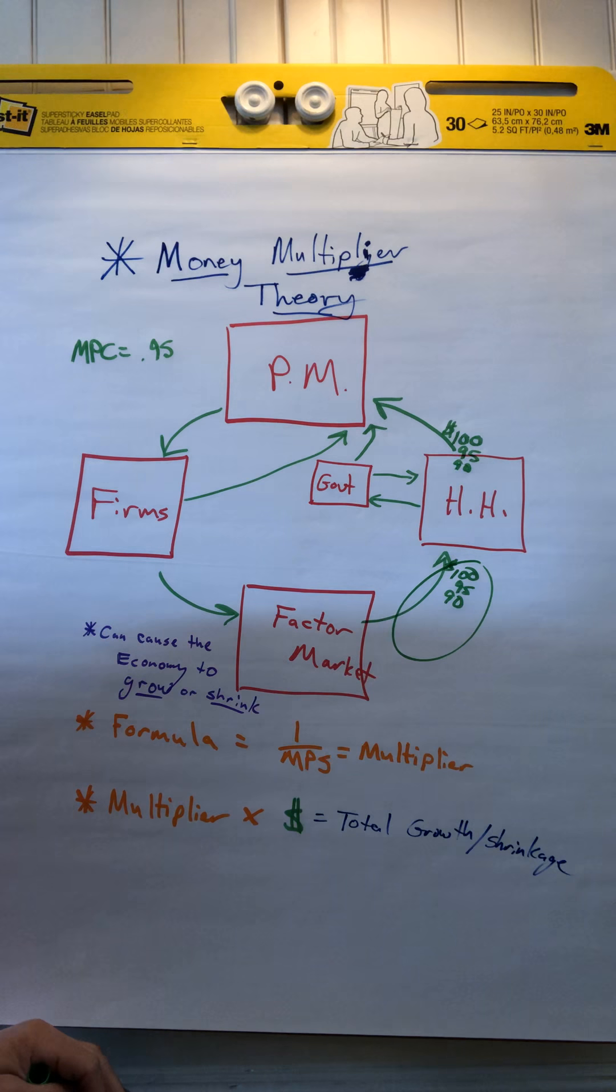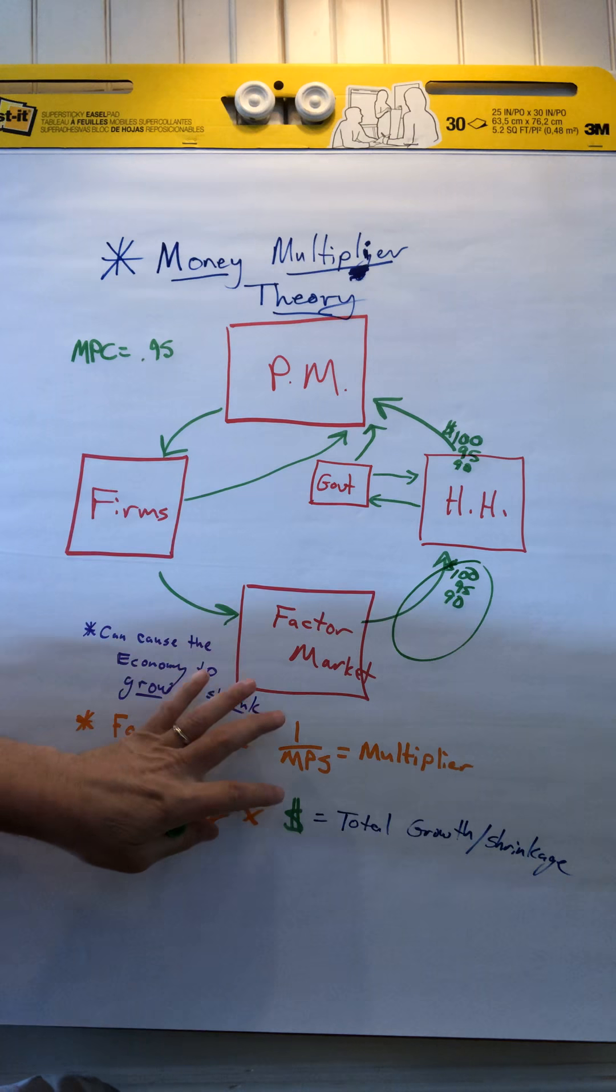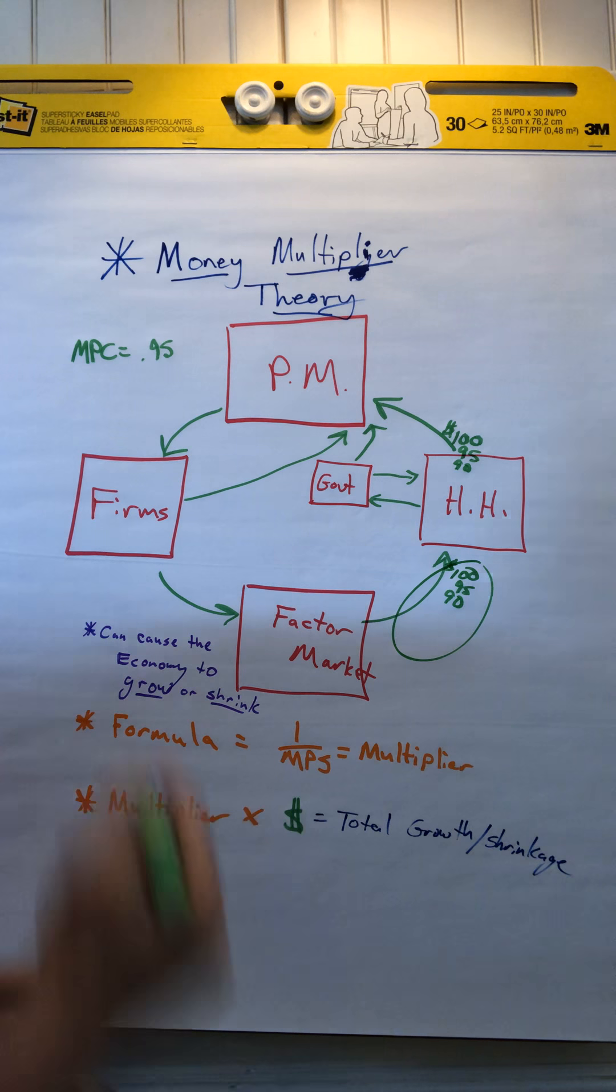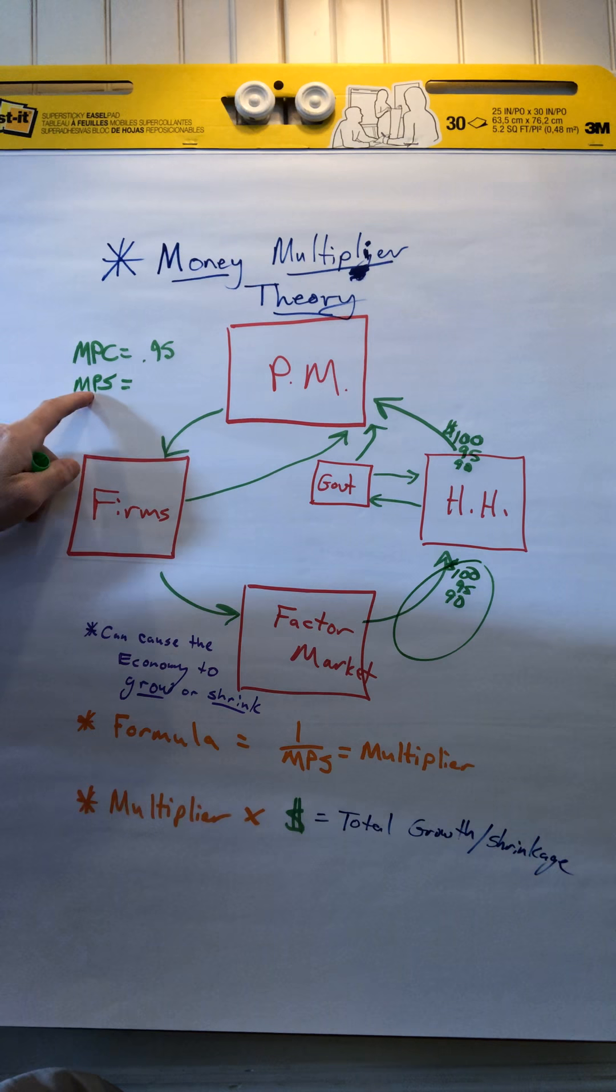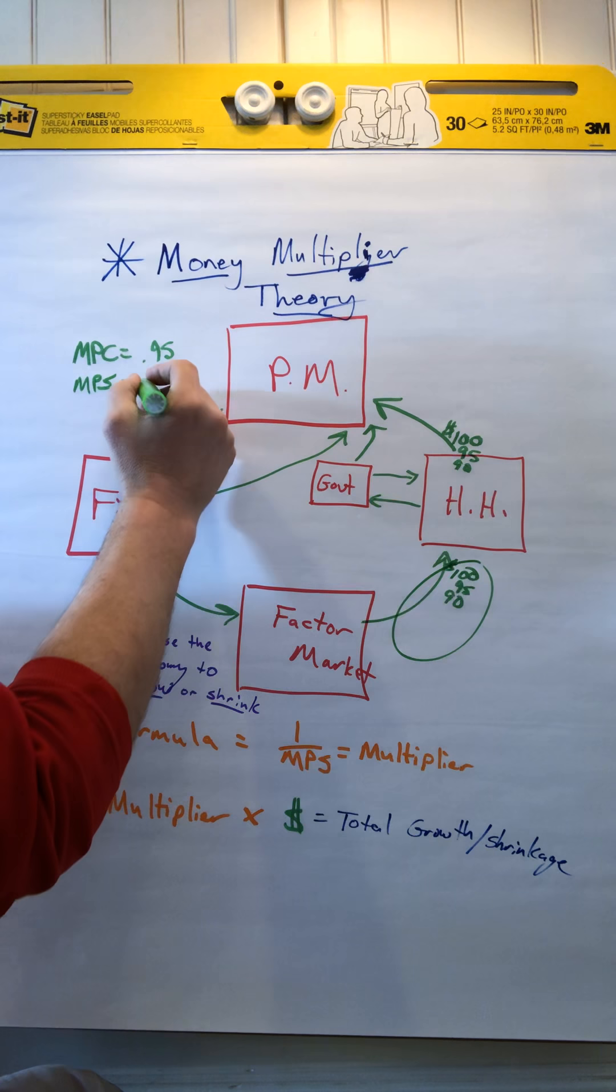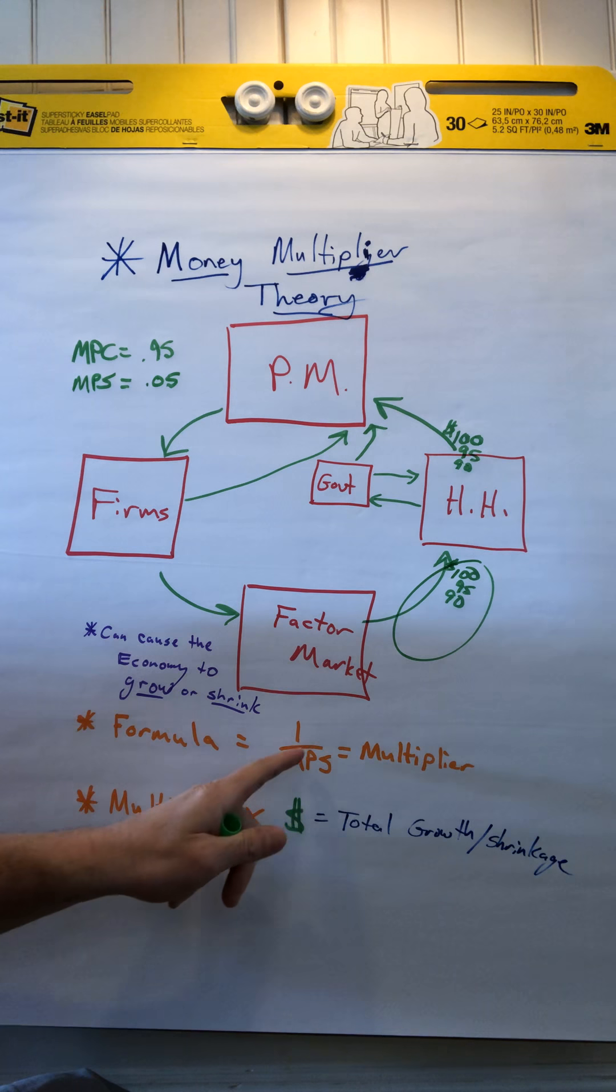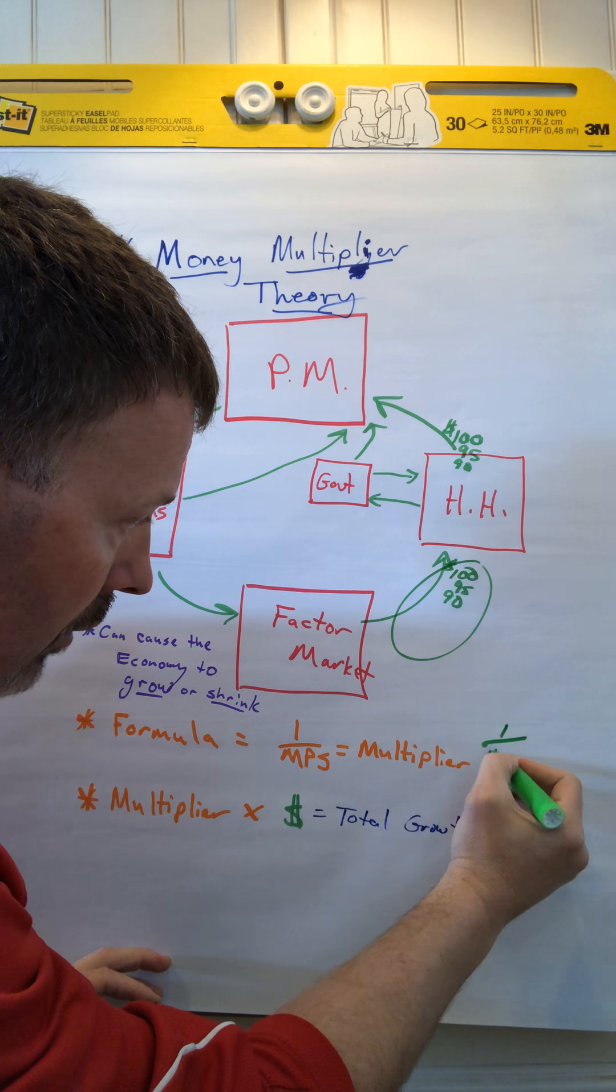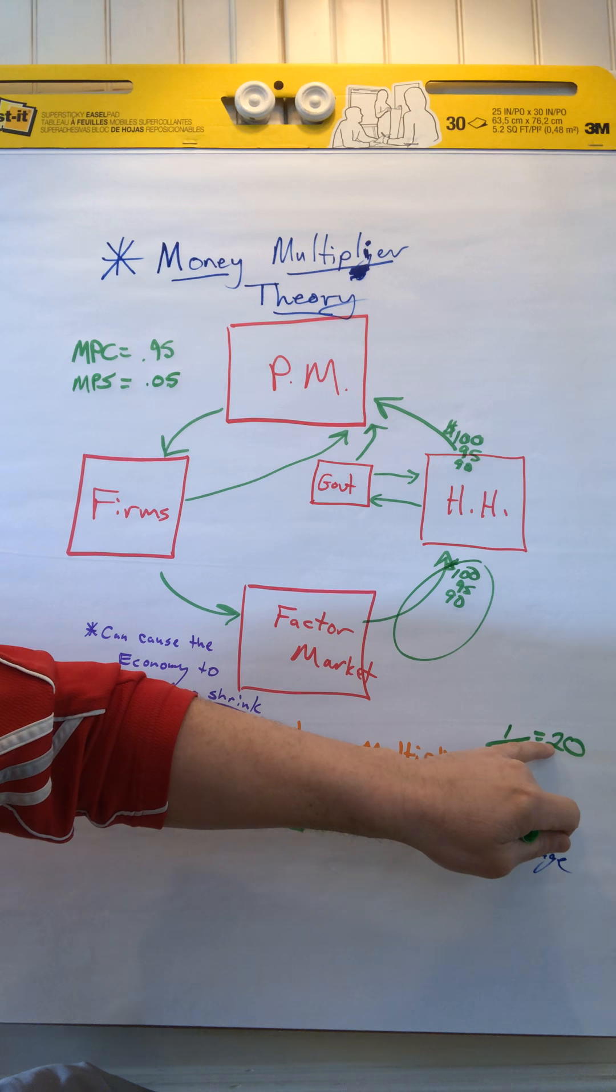Now instead of adding all these up and seeing how much money ends up being created in the economy, you can use the formula. So if you take a look down here, the formula is 1 over MPS. Now MPS is marginal propensity to save. So if we're spending 95% of our money, we're saving 5%. So if you plug it into the formula down here, 1 over MPS, 1 over 0.05 equals 20. So that means our multiplier is 20.